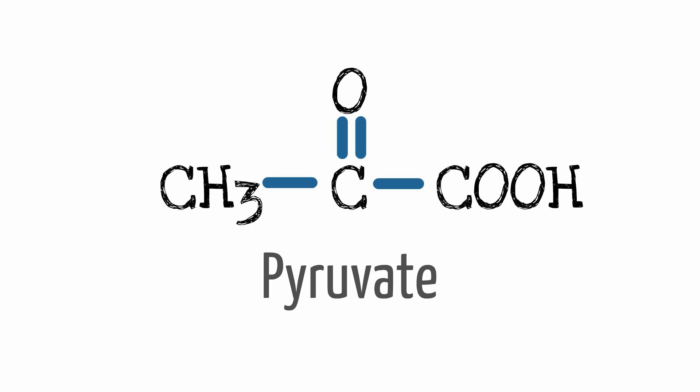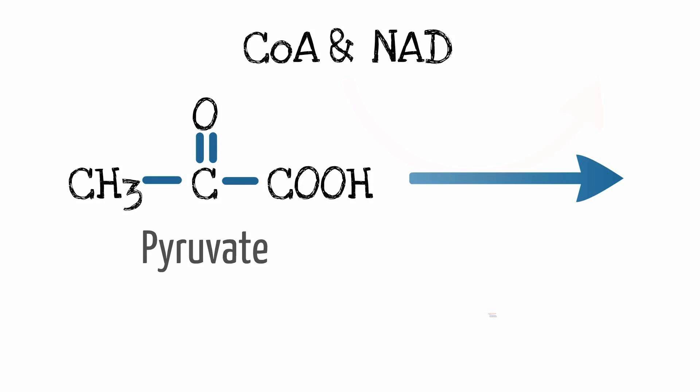We highlighted in our previous video the process of glycolysis and pyruvate decarboxylation. Today we will talk about the Krebs Cycle, which takes place in the mitochondrial matrix. As we go along, I would either draw out the Krebs Cycle and make notes, or print out the diagram we have provided from the link in the description below and make notes on that.